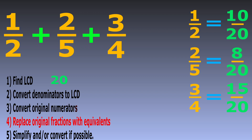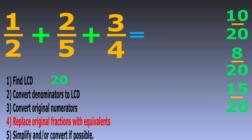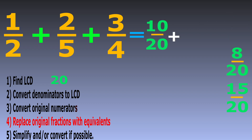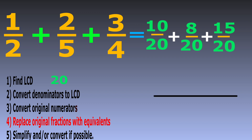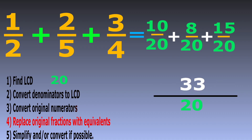Step 4: we replace the original fractions with these equivalent fractions and rewrite the sum. So 1 over 2 plus 2 over 5 plus 3 over 4 equals 10 over 20 plus 8 over 20 plus 15 over 20. This is now a sum with similar fractions, so we add the numerators while keeping the denominator 20: 10 plus 8 plus 15 over 20, which gives us 33 over 20.